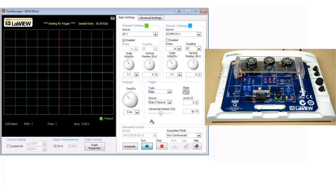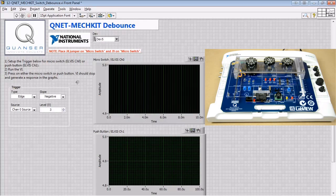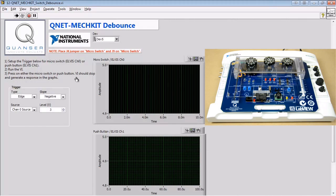First, we'll run the oscilloscope instrument to qualitatively analyze the signal measured from the micro switch being pressed. Next, we'll run the debounce VI and observe the response of the micro switch.